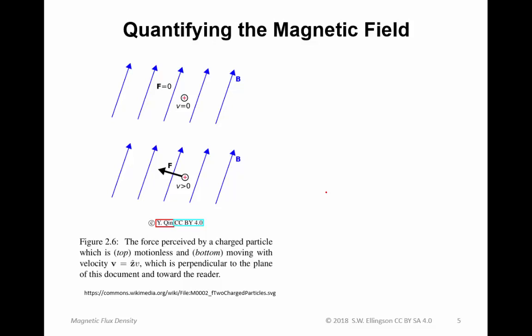Here's a graphic showing how we quantify the magnetic field. I have a magnetic flux density — a spatially uniform vector field, the same at all points in space, always pointing in the direction indicated by these arrows. In this experiment, I have a positively charged particle that is motionless in space; the velocity vector V equals zero. I find that the situation is pretty boring: the force on the particle is zero.